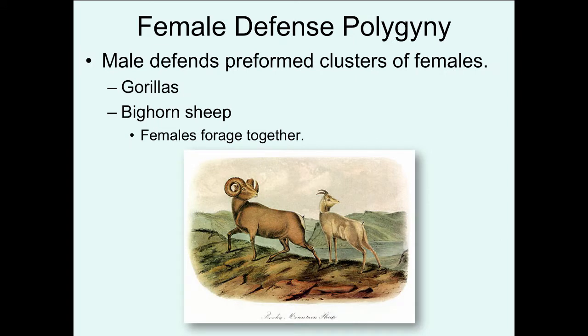Female defense polygyny is where males defend preformed clusters of females. Examples include gorillas and bighorn sheep, where the dominant male keeps all other males away from the cluster. These species typically show evolution of direct male-male competition traits like large body size — think of how big male gorillas are — or weapons like the horns of bighorn sheep.